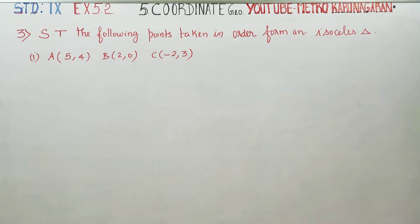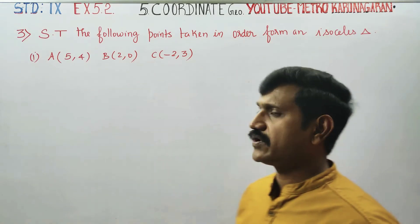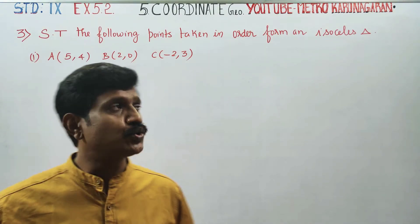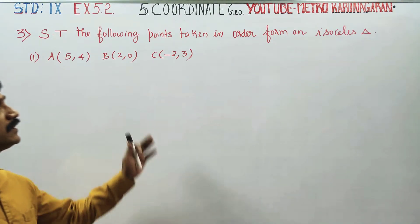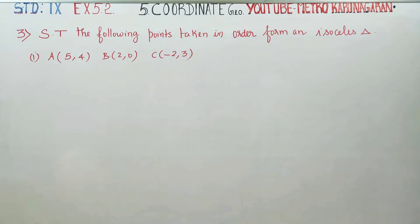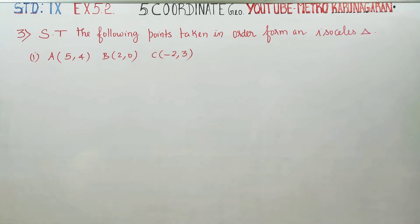Dear 9th standard students, I am Metro Karanagaran. In Exercise No. 5.2, Sum No. 3: show that the following points taken in order form an Isosceles Triangle.